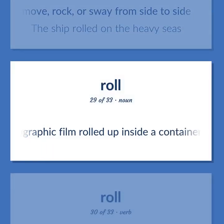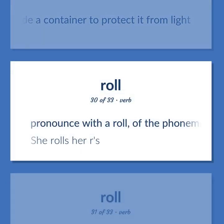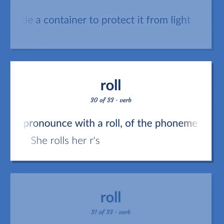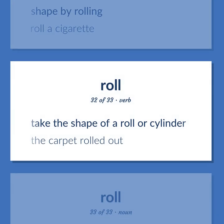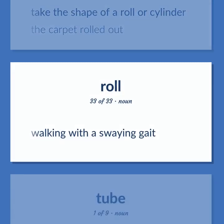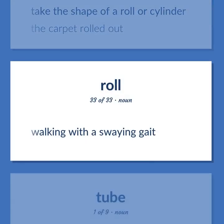Roll (continued): photographic film rolled up inside a container to protect it from light. Pronounce with a roll of the phoneme R — she rolls her Rs. Shape by rolling — roll a cigarette. Take the shape of a roll or cylinder — the carpet rolled out. Walking with a swaying gait.